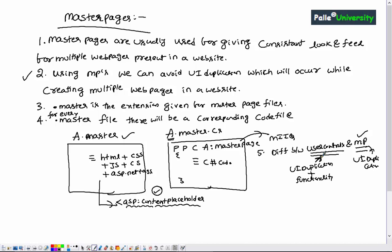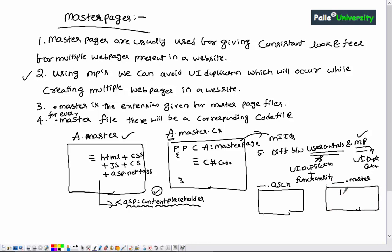There is one more considerable difference. When creating a user control, the extension is .ascx, while a master page uses the extension .master. In a .master file you are allowed to create html, head, and body tags, but in a user control you cannot use the html, head, or body tags. Master pages support these three tags; user controls do not.